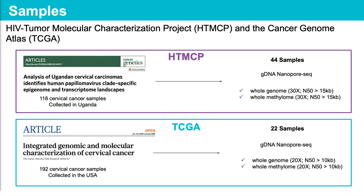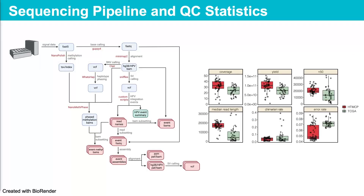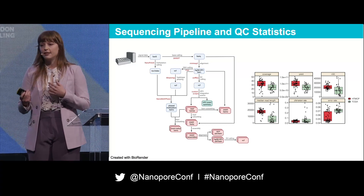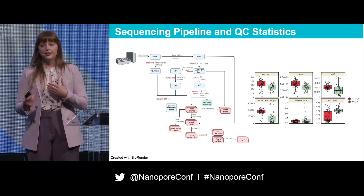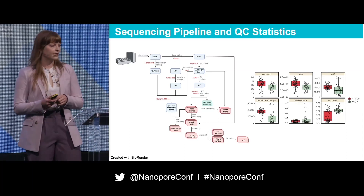The first cohort is the HIV Tumor Molecular Characterization Project (HTMCP), with a total of 118 cervical cancer samples, of which we have sequenced 44. From TCGA we have sequenced 22 samples from a total pool of 192. On these samples we perform the Genome Sciences Center's Nanopore Analysis Pipeline, which includes base calling, alignment, SNV calling, structural variant calling, as well as methylation and phasing. Following that pipeline, I do my own custom workflow that I've developed for HPV-containing samples.